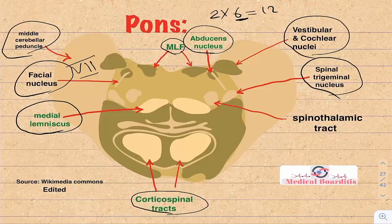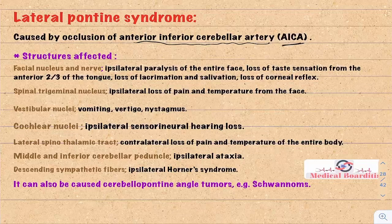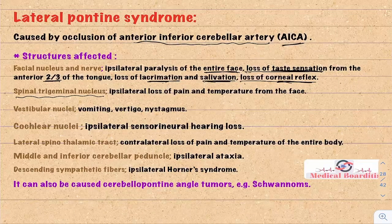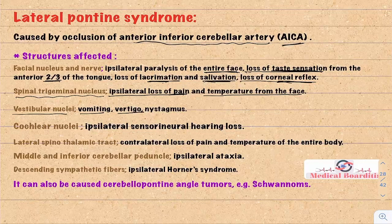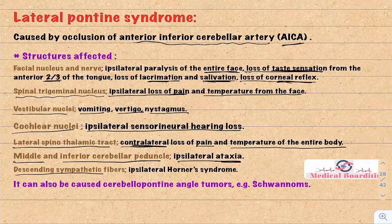Lateral pontine syndrome is caused by occlusion of AICA, a branch of the basilar artery. Affected structures include: facial nucleus and nerve — ipsilateral paralysis of the entire face, loss of taste from anterior two-thirds of tongue, loss of lacrimation, salivation, and corneal reflex; spinal trigeminal nucleus — ipsilateral loss of pain and temperature from the face; vestibular nuclei — nausea, vomiting, vertigo, and nystagmus; cochlear nuclei — ipsilateral sensorineural hearing loss; lateral spinothalamic tract — contralateral loss of pain and temperature from the body; cerebellar peduncles — ipsilateral ataxia; and descending sympathetic fibers — ipsilateral Horner's syndrome.